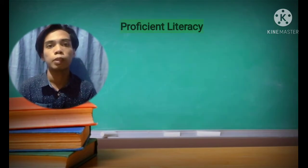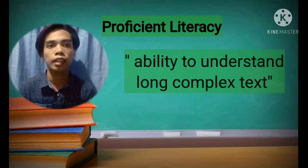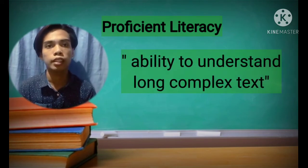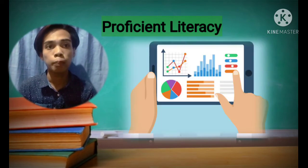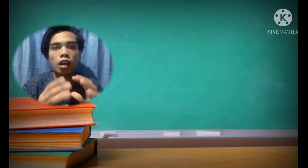Last is proficient literacy, the ability to understand long, complex texts. Examples include comparing viewpoints in newspapers, interpreting statistical graphs, and calculating the cost of food items by weight.